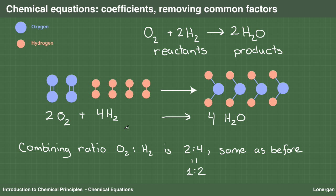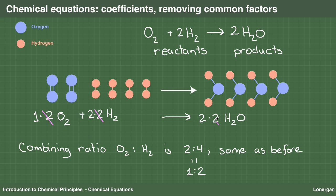Any common factors are removed by dividing them out in the same way one could simplify an algebraic equation. Factoring, one sees that all of the coefficients have a common factor of two. Chemical equations can be treated much like algebraic equations, in that multiplying or dividing all of the coefficients by a number leaves them unchanged. Dividing both sides by two cancels the common factor of two, and leaves us with our original equation. None of the coefficients have a common factor other than one. This is the conventional way of writing a chemical equation.